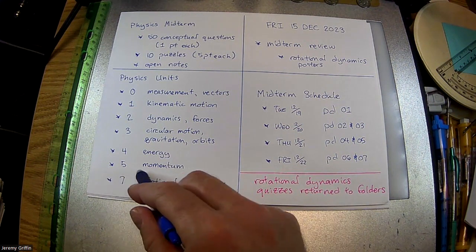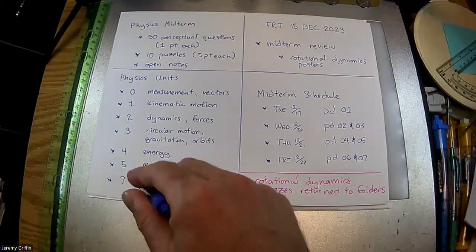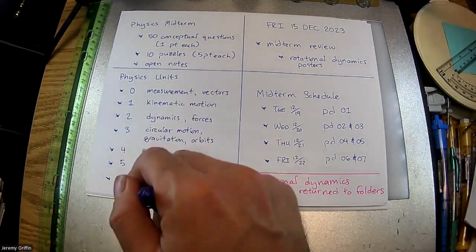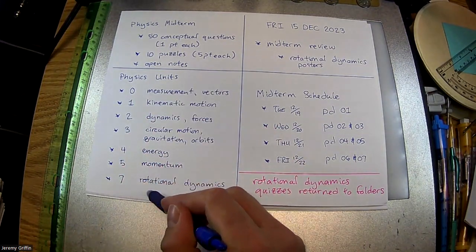I don't have unit six here. Unit six is harmonic motion. We're going to save that for January. And actually, that'll be a wrap on everything from AP. And then we'll do a bunch of reviews with you guys.